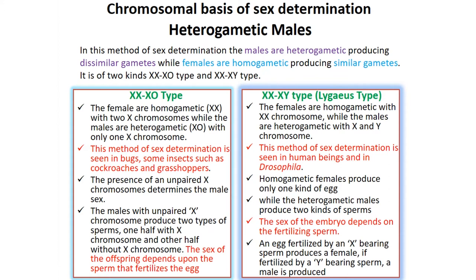In the XO type, females are homogametic with two X chromosomes, while males are heterogametic with only one X chromosome (XO). This method of sex determination is seen in bugs and some insects such as cockroaches and grasshoppers. The presence of an unpaired X chromosome determines the male sex. The male produces two types of sperm: one with an X chromosome and one without, containing only autosomes. The sex of the offspring depends on the sperm that fertilizes the egg.